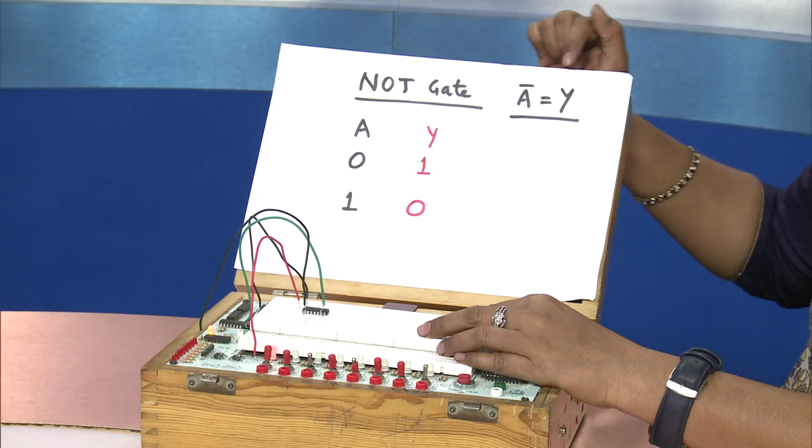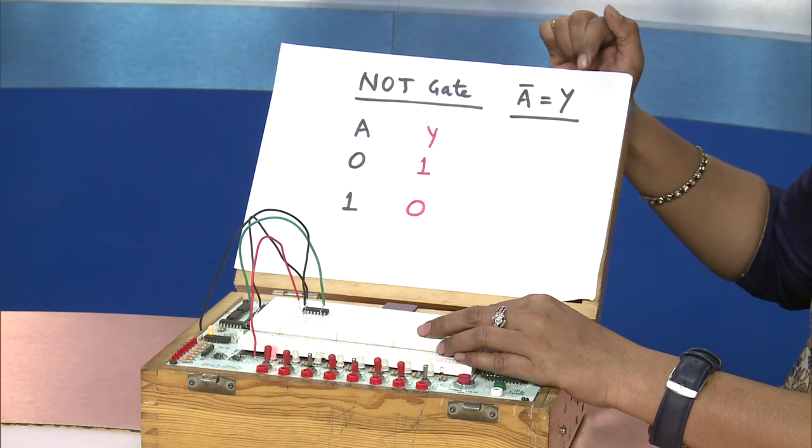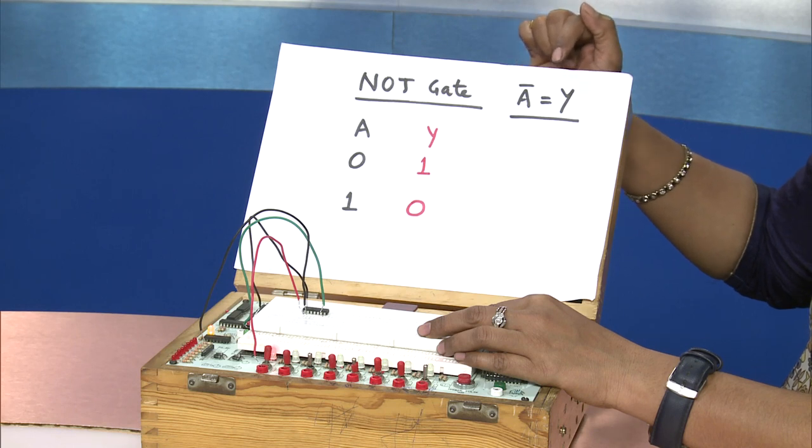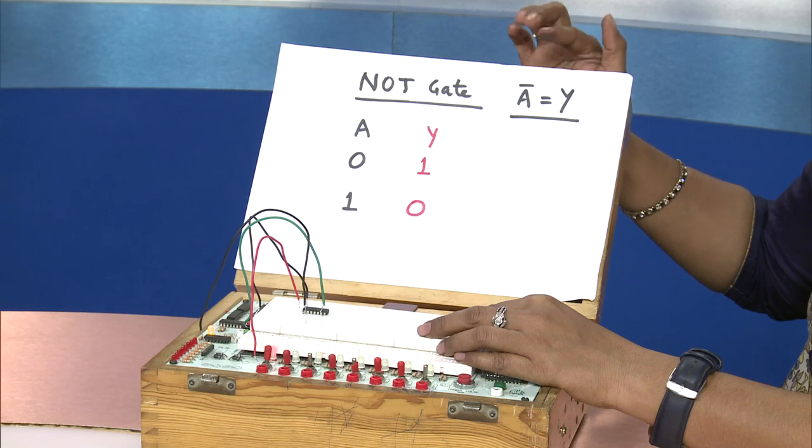Thus the boolean expression of the NOT gate is Y equals A bar or A complement. This is how a NOT gate works. In today's topic we discussed the NOT gate. We verified the truth table of the NOT gate using our experiment. Thank you learners.